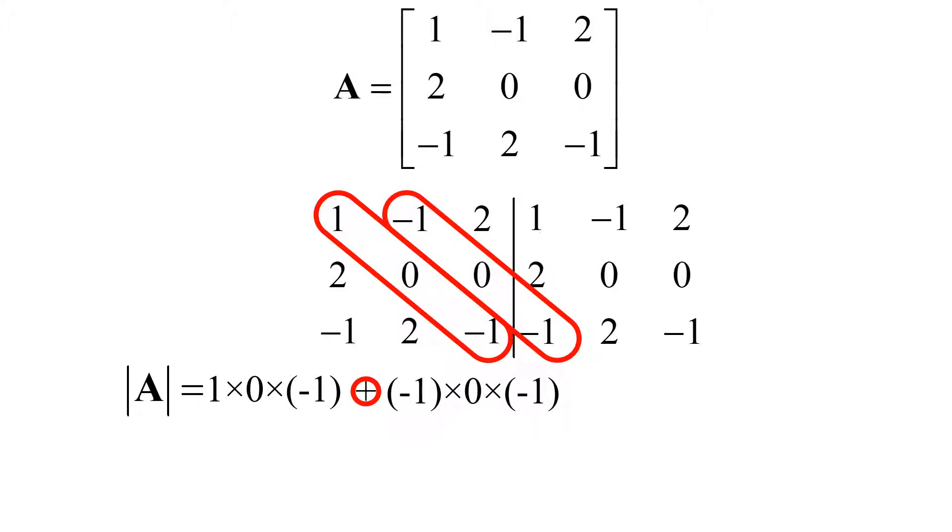Next, we will take the next three elements in the backward slash direction from the second column to do the same thing. We have minus 1, 0, and minus 1, then multiply them together, and we will add these to the previous term. Next step is to repeat the same for the third column.